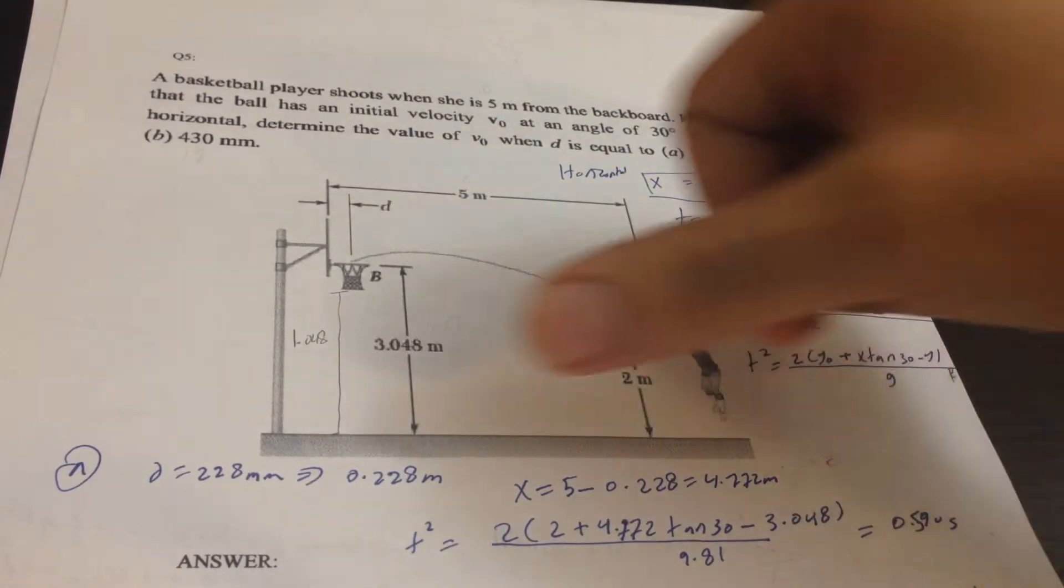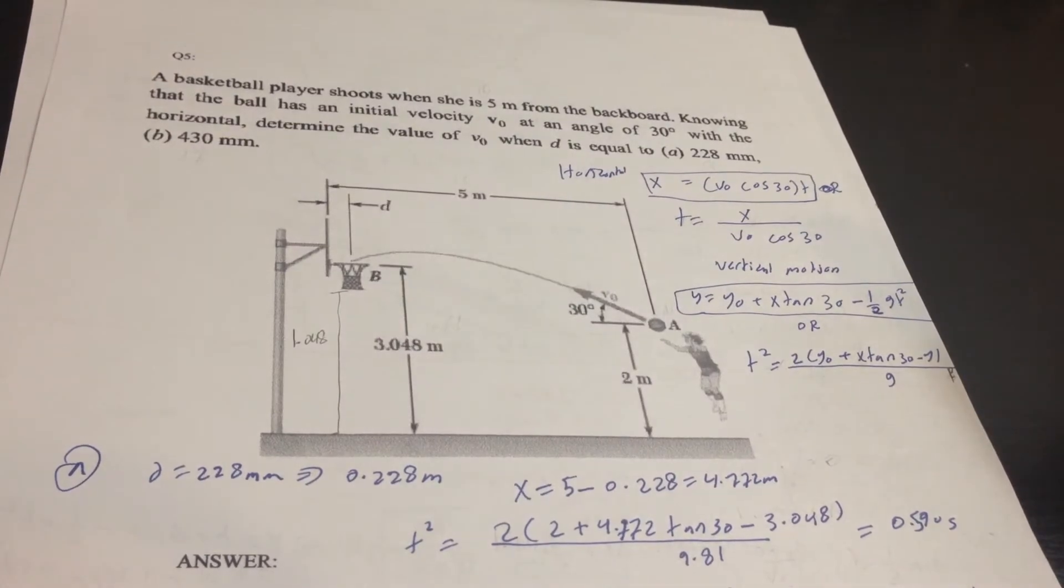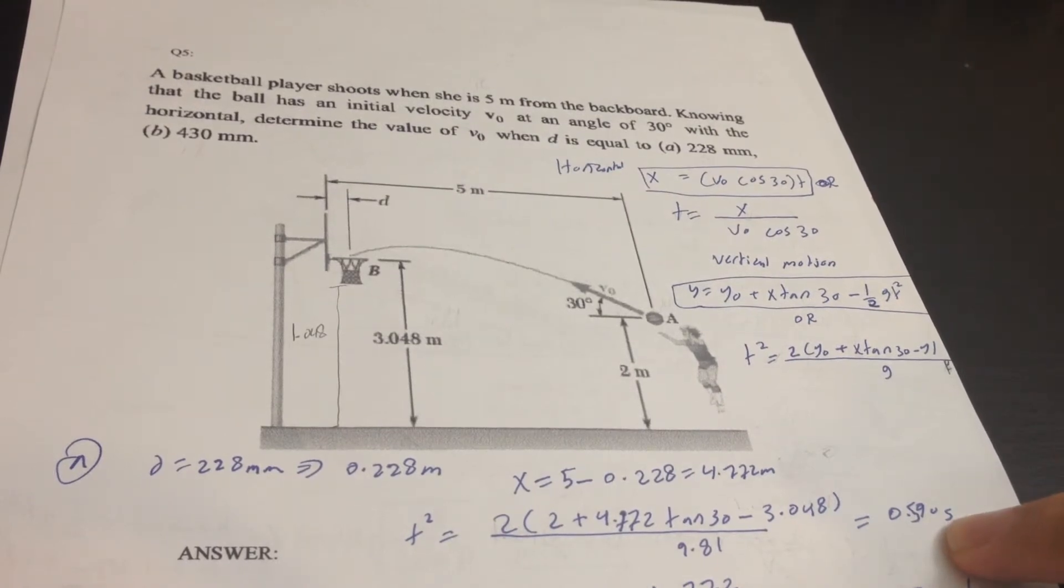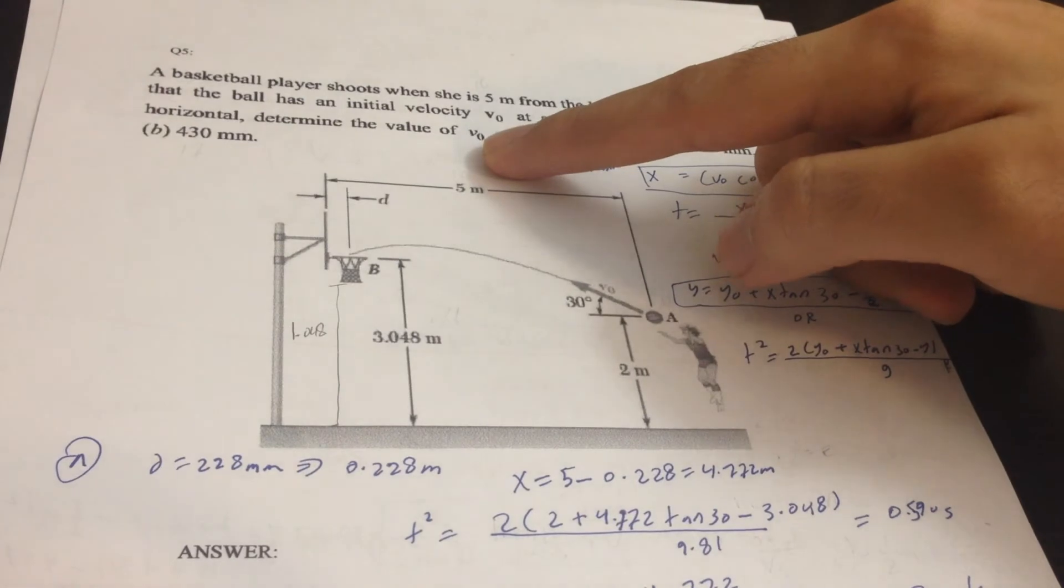So we have to use this equation and change X. So we'll have this number, and then we need to find V0 because here they ask us what is the value of V0.